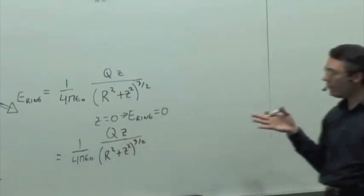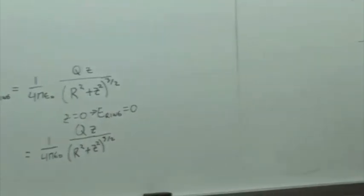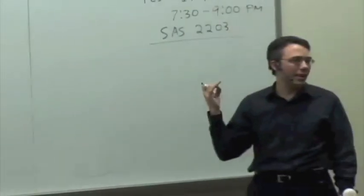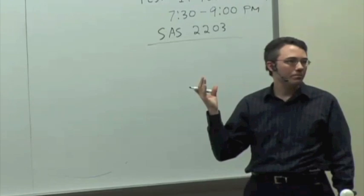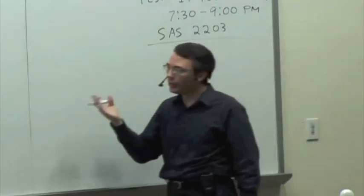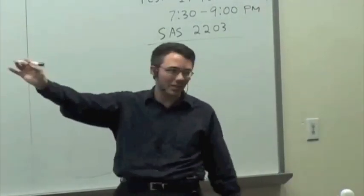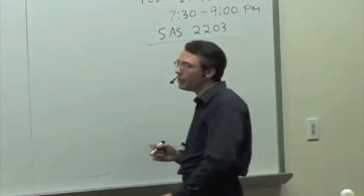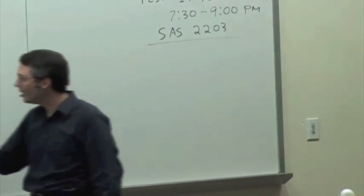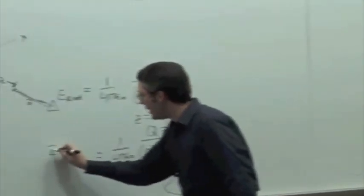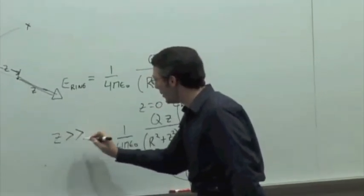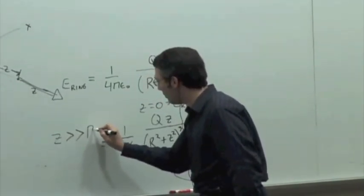Let's think about this. If you have a situation where you're very far away from the ring, what would you expect the electric field to look like? It would look like a point charge, right? As you get farther and farther away, the ring kind of recedes, and it basically looks like a point from your point of view, right? So that's the situation where if z is much, much bigger than r, right?